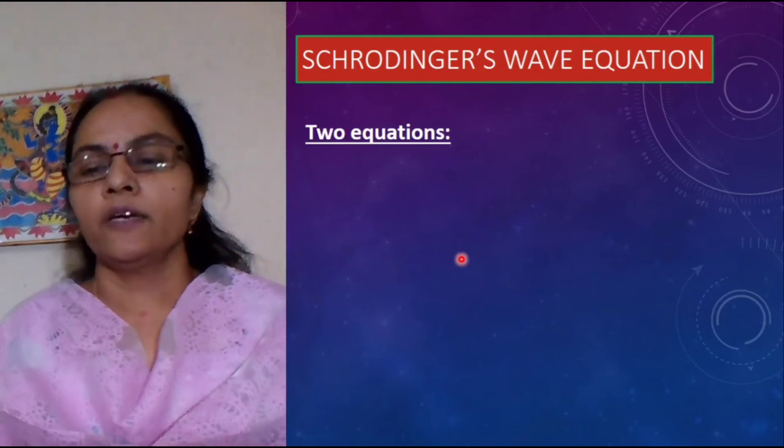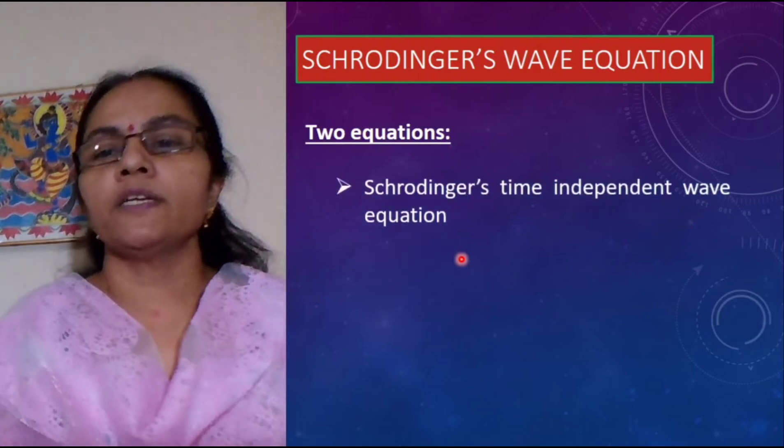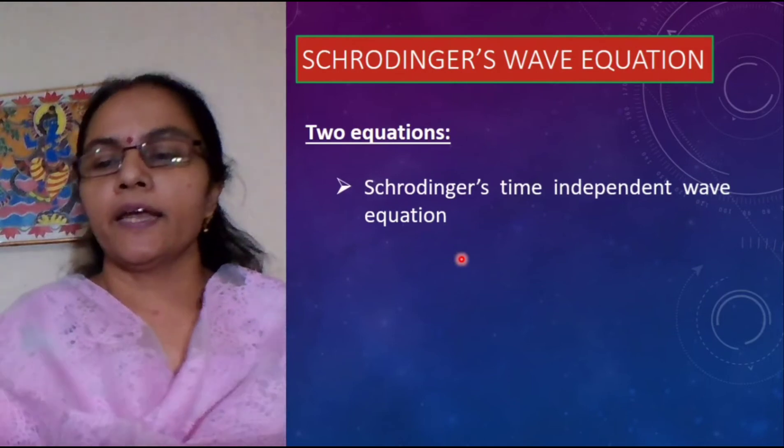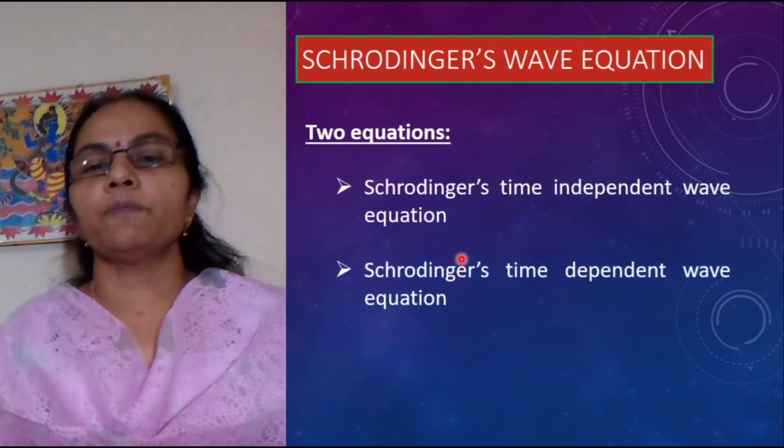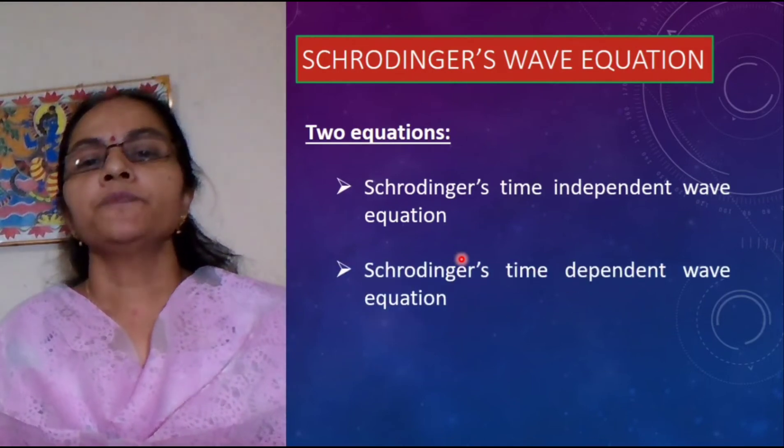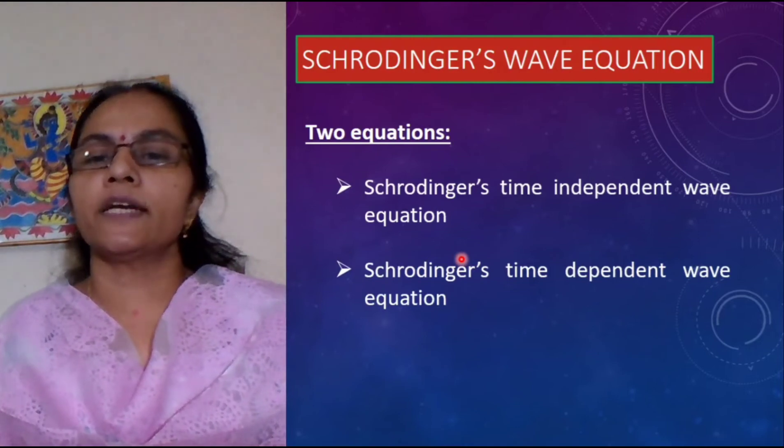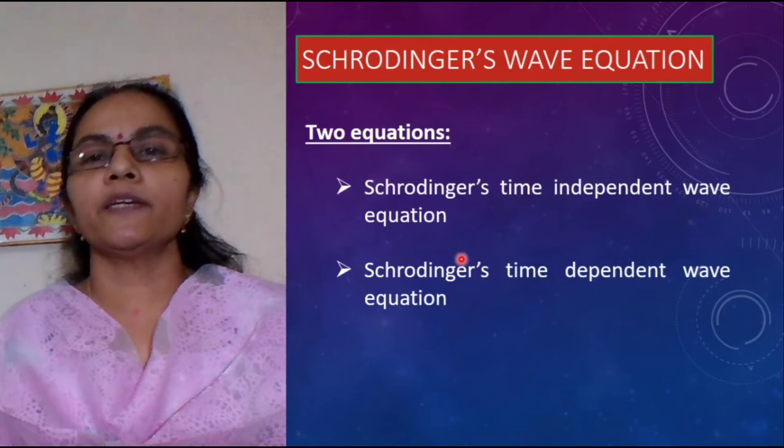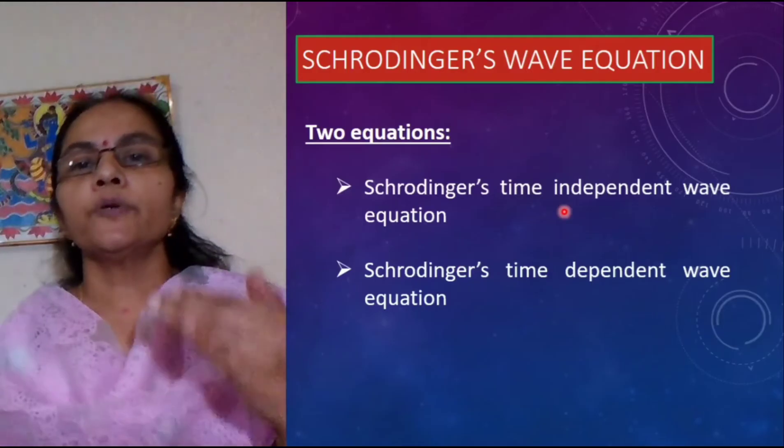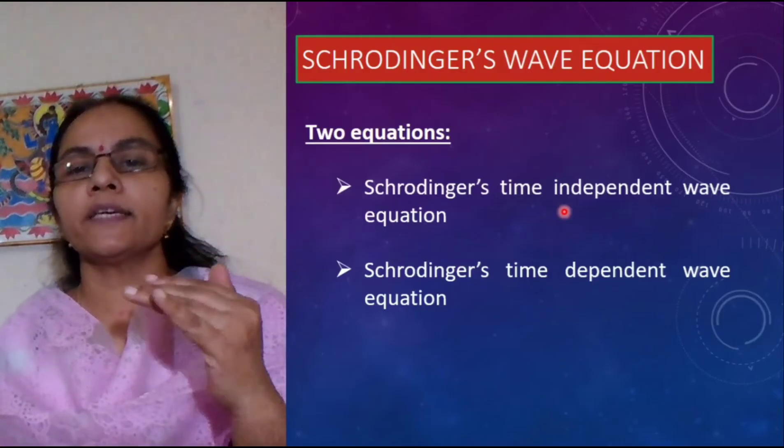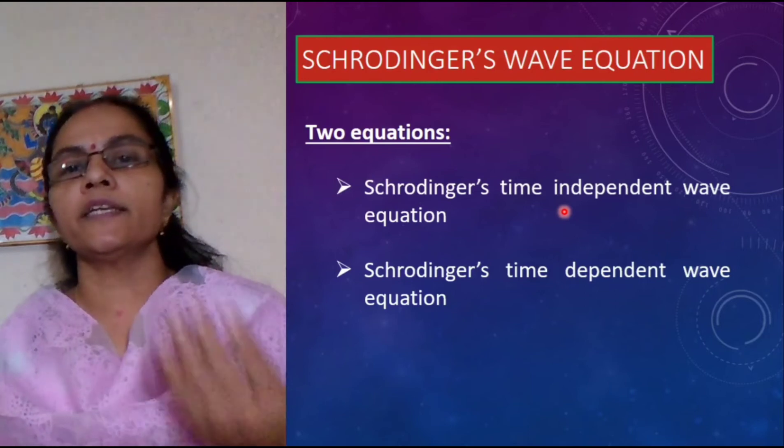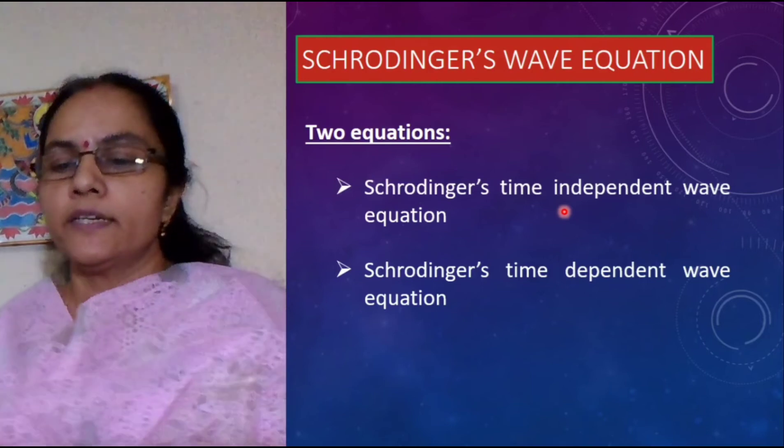Further there are two equations given by Schrodinger. One is time independent wave equation and the second one is time dependent wave equation. In your syllabus we have only this Schrodinger's time independent wave equation. Today we will just see what is exactly this equation and in the next class we will go for the derivation.